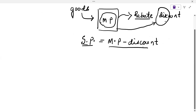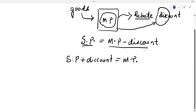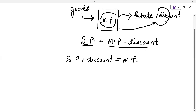Just to remember: when we need the marked price and given is selling price and discount, then marked price equals discount plus selling price. And selling price is equal to marked price minus discount.